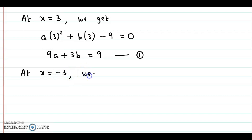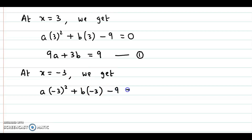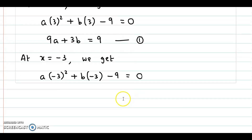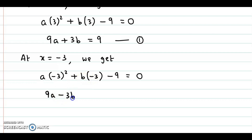Next, we substitute x equal to minus 3 and we get a into minus 3 squared plus b into minus 3 minus 9 equal to 0. Minus 3 squared is 9, so 9a minus 3b minus 9 equal to 0. Transferring minus 9 to the right-hand side gives 9a minus 3b equal to 9. This is equation number 2.